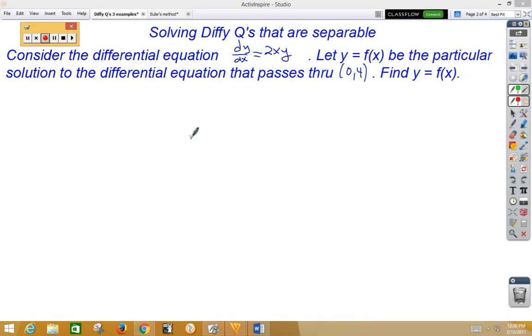Again, the first thing you want to do is separate. Now, this time, we need to get the y's on the left side and the x's on the right side. So in order to move y to the other side, we're just going to divide it over. So I'm going to have 1 over y dy. I'm going to kill the fraction on the left side by multiplying the dx over to the right, so I have 2x dx. That separates my variables.